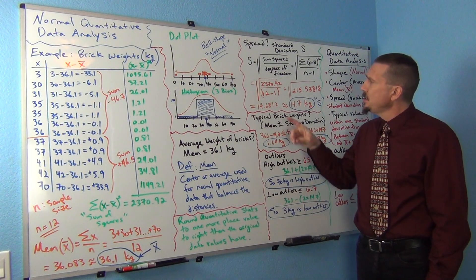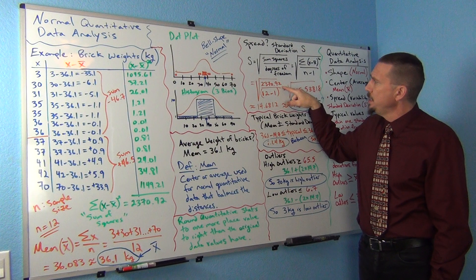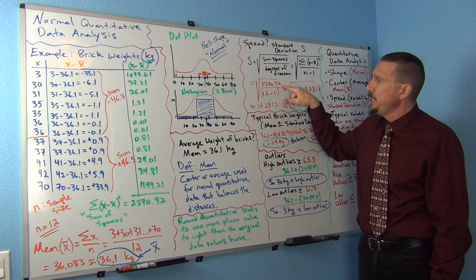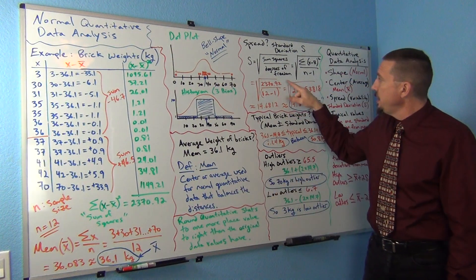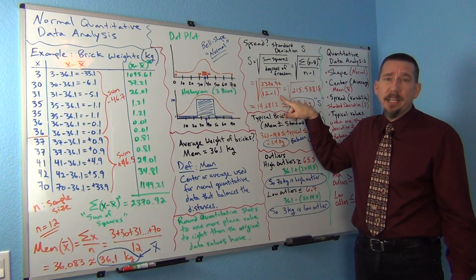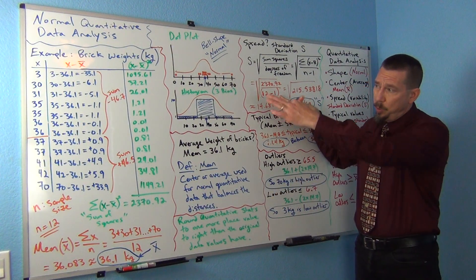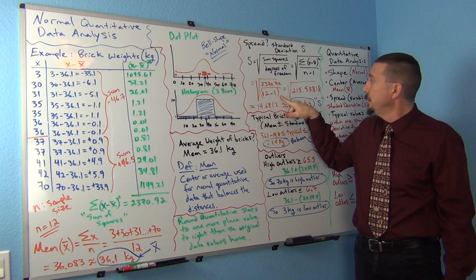So, in our case, our sum of squares was 2370.92. We calculated it right there. Then we're going to divide by 12 minus 1, or 11. Remember, there were 12 numbers in the data set. So, 12 minus 1 is 11.